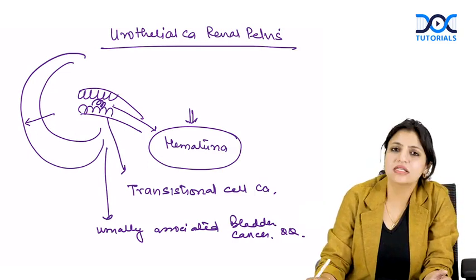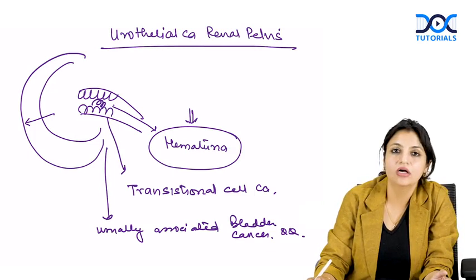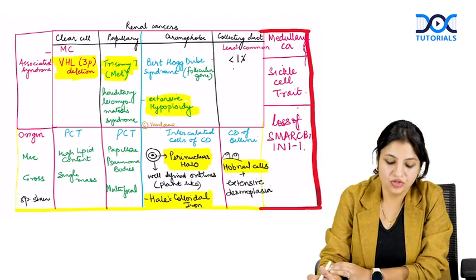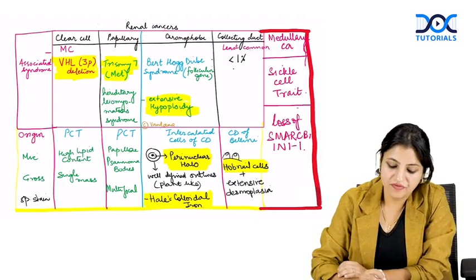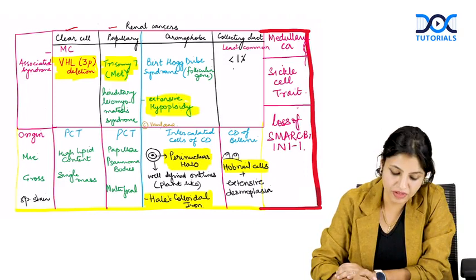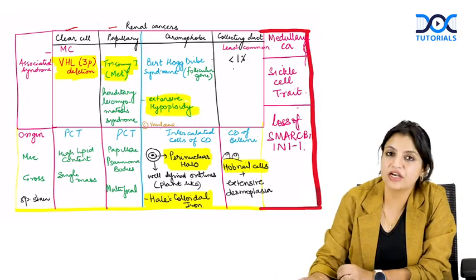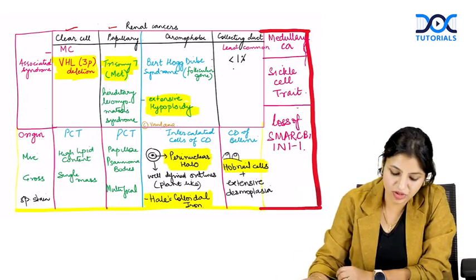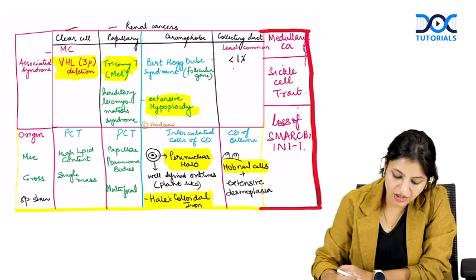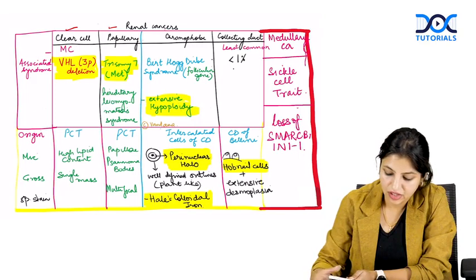To summarize the malignant renal tumors: clear cell and papillary carcinoma both arise from the proximal convoluted tubule. VHL mutation is most common in clear cell, and trisomy 7 is common in papillary. Hereditary leiomyomatosis syndrome is associated with papillary carcinoma, and psammoma bodies are very characteristic of papillary. Multifocality is also a feature.